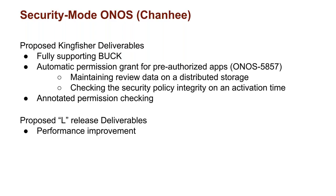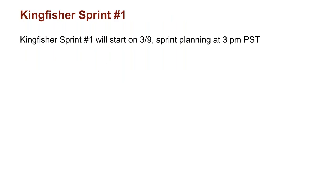For security mode ONOS in Kingfisher, deliverables include fully supporting OSGi, automatic granting of permissions for pre-authorized apps, and annotated permission checking. In the L release, the focus will be on performance improvement. Kingfisher Sprint 1 starts this Thursday with the sprint planning session at 3 p.m. The sprints have already been added to JIRA so you can go in and add the stories you plan to work on. For those needing additional sprints created for their brigade, please ping the organizer to get those added.